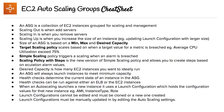The size of an ASG is based on the min, max, and desired capacity. A target scaling policy scales based on when a target value of a metric is breached — for example, when average CPU utilization exceeds 75%. A simple scaling policy triggers scaling when an alarm is breached. Scaling policy with steps is the newer version of simple scaling policy and allows you to create steps based on escalating alarm values.